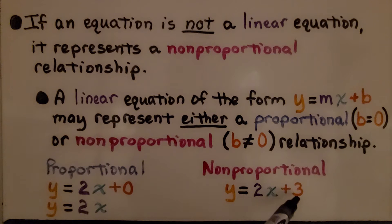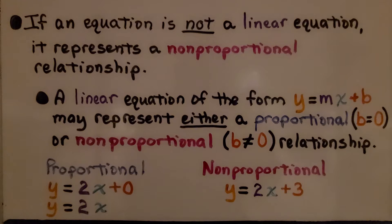For a nonproportional example, our b value is plus 3, which is not equal to zero, so it's nonproportional.